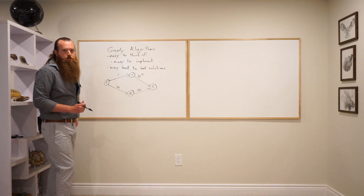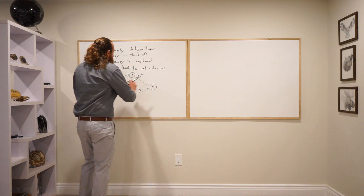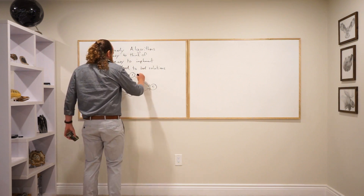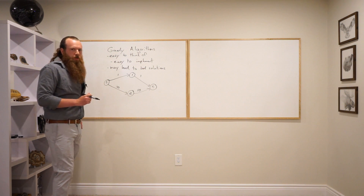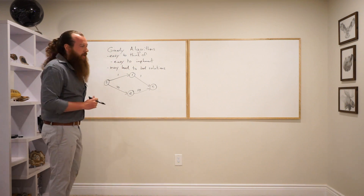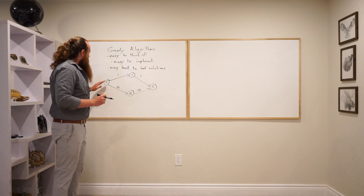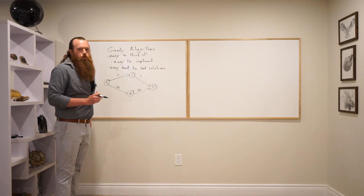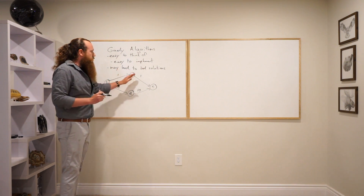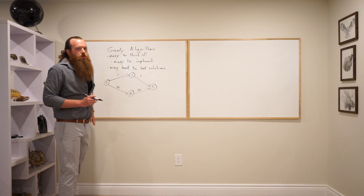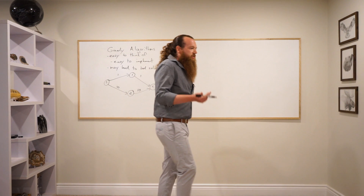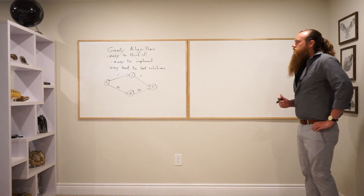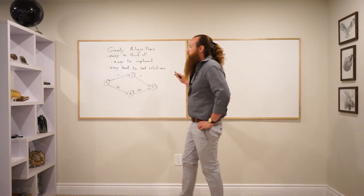Are there situations where a greedy algorithm would find the shortest path? Of course. You can imagine a graph where the greedy algorithm takes the shortest edge and finds the correct shortest path from S to T. So there's nothing saying a greedy algorithm can't do well, but it seems like greedy algorithms may lead to bad solutions — it seems like you're gambling a little bit.